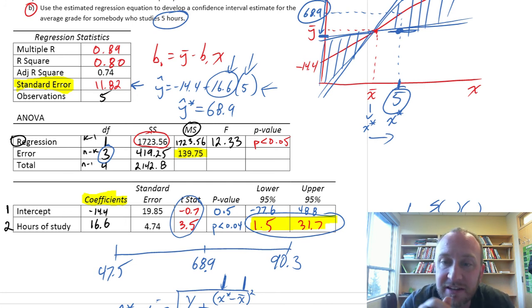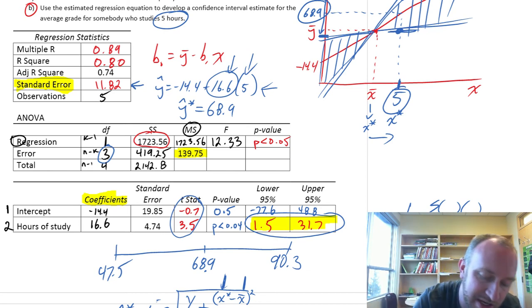My interval estimate, for somebody who studies five hours a week, they will receive, on average, a grade between 47.5% and 90.3%.